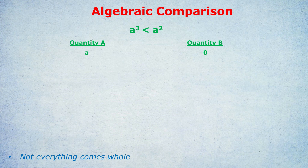Many of you will be thinking you've got it — A could be negative. A negative number like minus 2, when you cube it, stays negative because it's an odd power. Minus 2 cubed — minus 2 times minus 2 times minus 2 — is minus 8. It's still negative. Minus 2 squared is 4, and minus 8 is less than 4. So you might think A is negative, quantity A is smaller than quantity B which is 0, and therefore the answer is B.